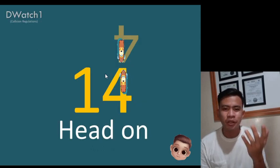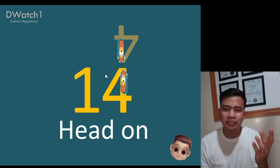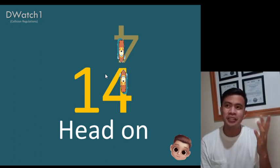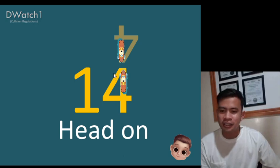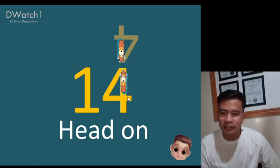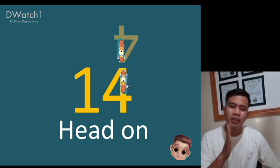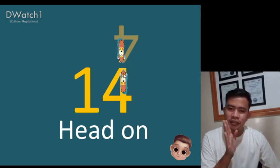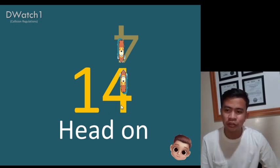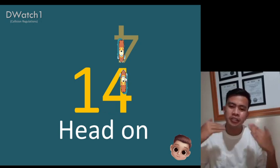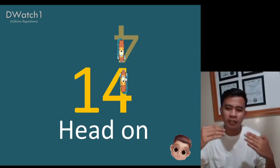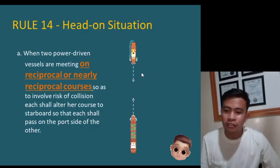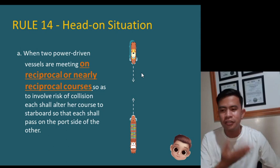To easily remember the title of Rule 14, you just need to imagine that the '4' is like an arrowhead — you need to imagine it as the head of an arrow — and that represents the head-on situation, wherein two ships are on reciprocal courses and there is a risk of collision.